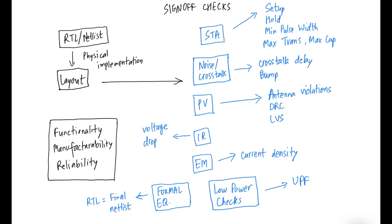In this video, let's take a look at the various sign-off checks in physical design. As we know, the physical design flow starts from the RTL or Gate Level Synthesized Netlist, which is usually provided to us by the front-end team.